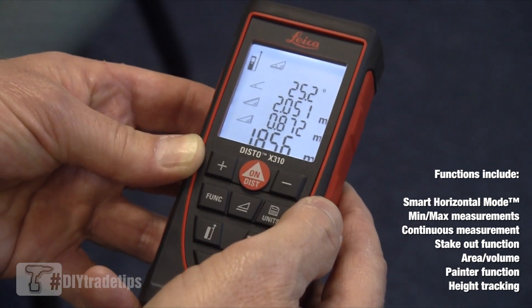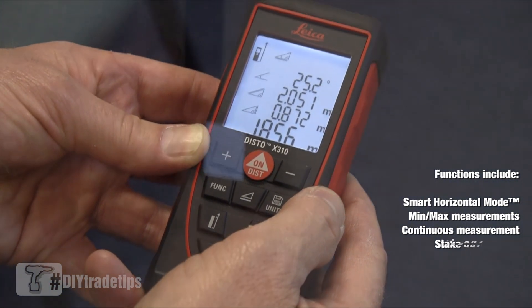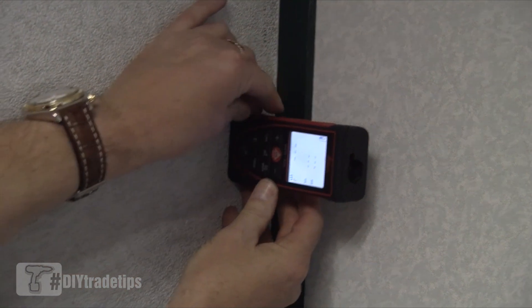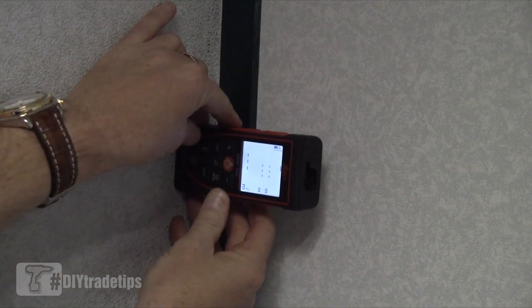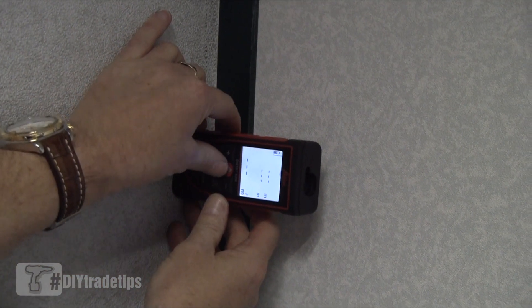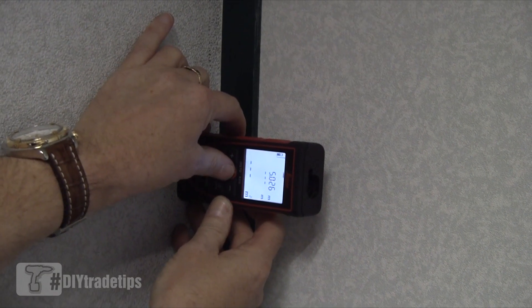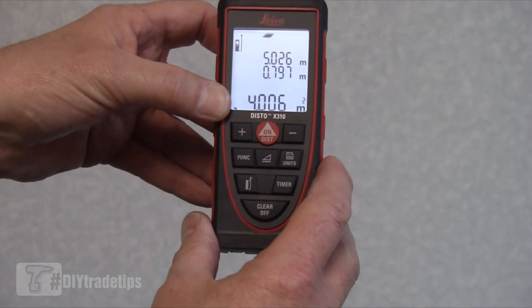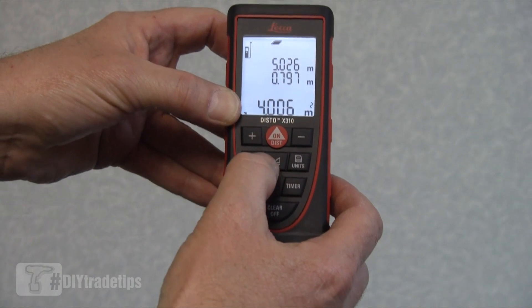We have an area function on the X310. We take two measurements: first one across the wall, second one floor to ceiling. With two measurements, we now have the square meter area of the wall.